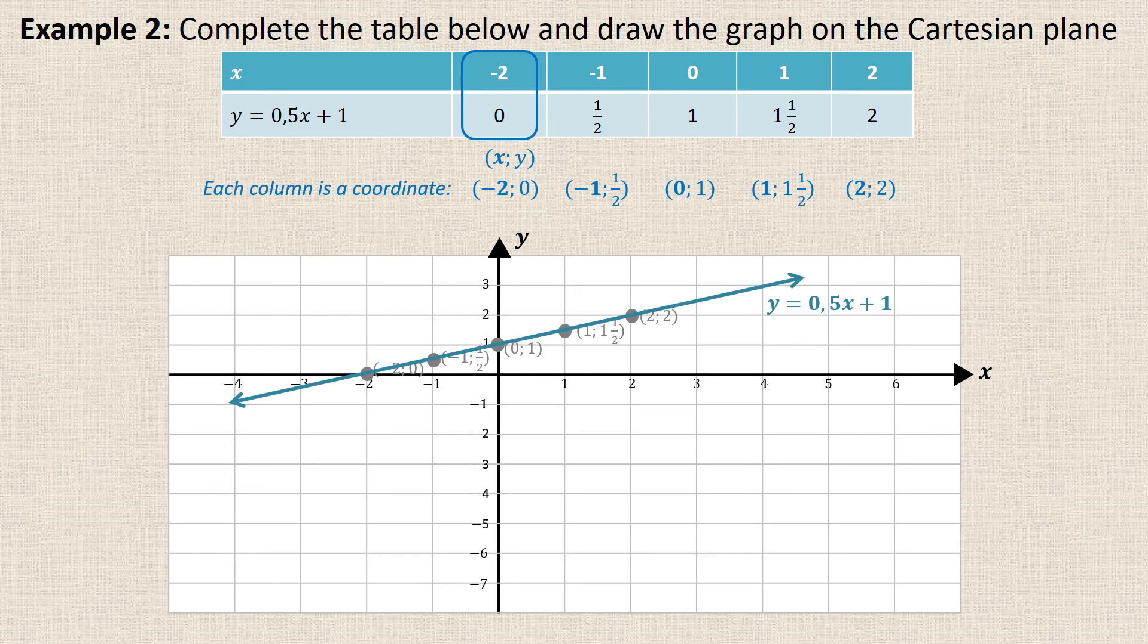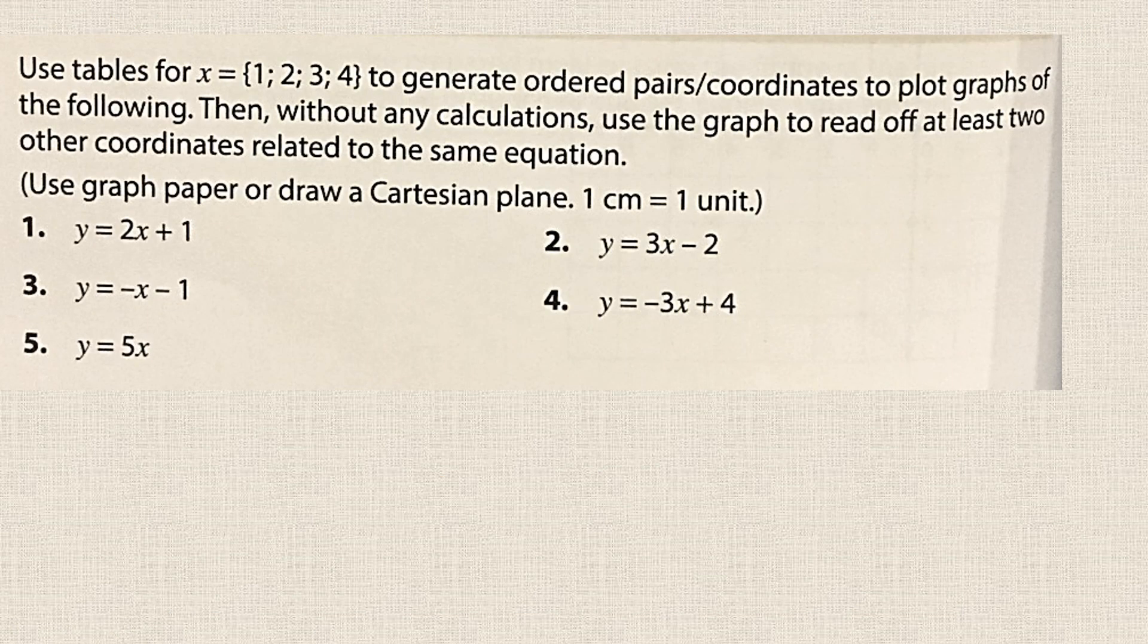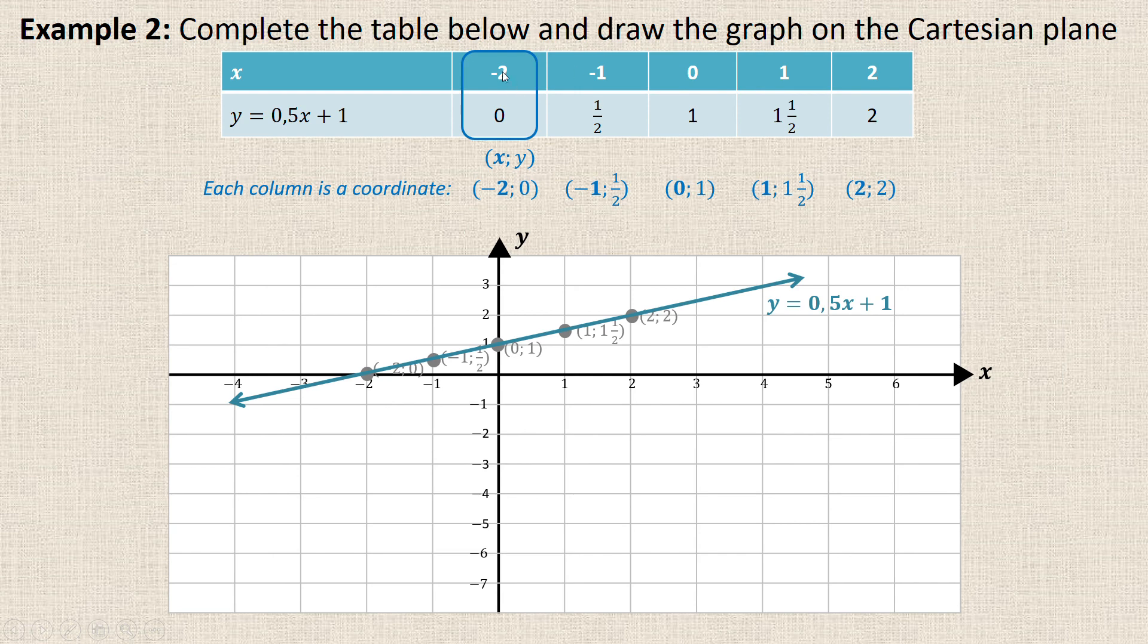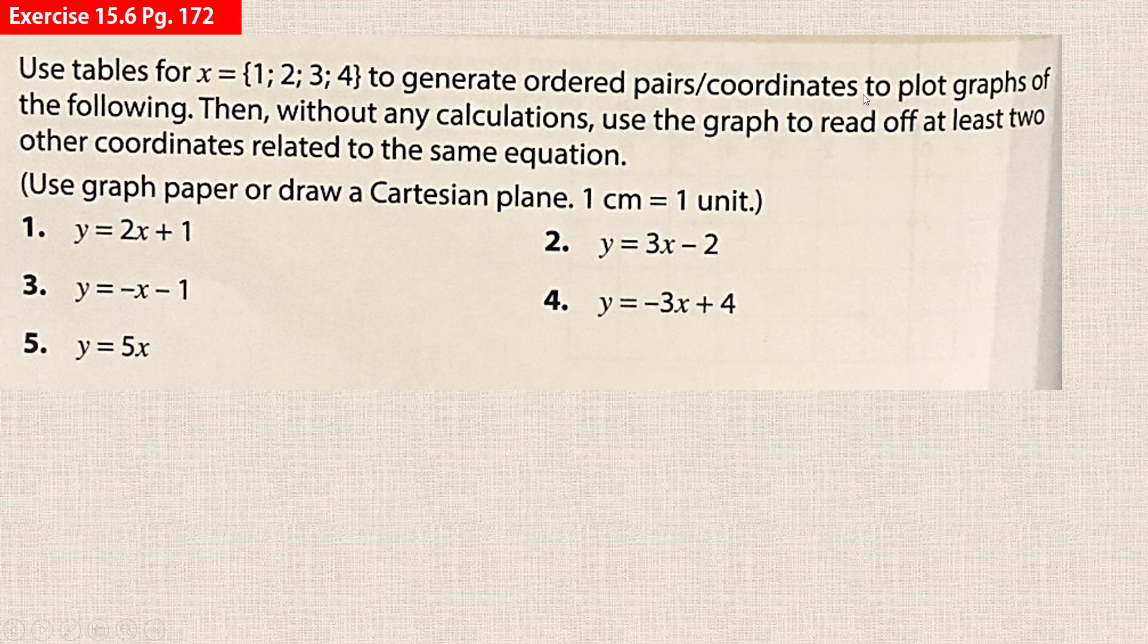For homework guys, I would like you to please do this exercise. It is exercise 15.6 on page 172. What they want you to do is generate a table, so your x values in your table are going to be 1, 2, 3, 4. Mine were negative 2, negative 1, 0, 1, 2. You're just going to have 1, 2, 3, 4. You're going to make a table for each one and plot the graph, so you're going to get your coordinate pairs, label them on a Cartesian plane, then join the graph and label the graph. For example this one will be y equals 2x plus 1. If you want to maybe draw two graphs on the same Cartesian plane then you can, so that you don't have to draw a Cartesian plane every single time. Good luck guys.